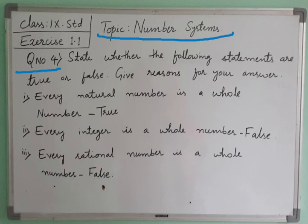First question: every natural number is a whole number. Yes, definitely. When we say a whole number, it is nothing but all natural numbers including 0 — we are considering one more number extra in the whole number. So we can say every natural number is a whole number, because the whole number is nothing but the collection of natural numbers along with 0.